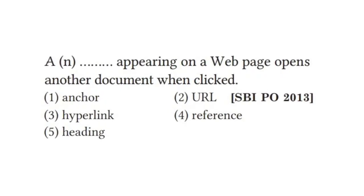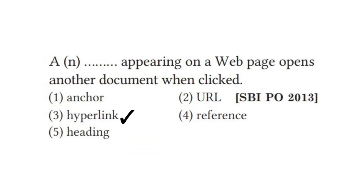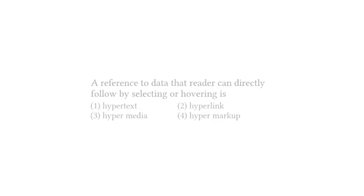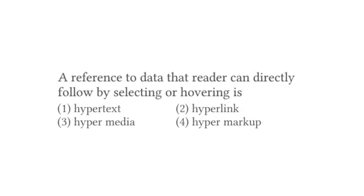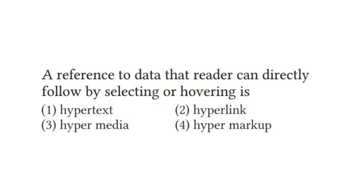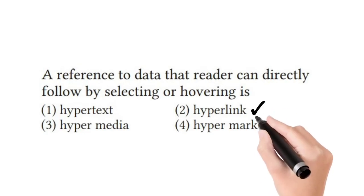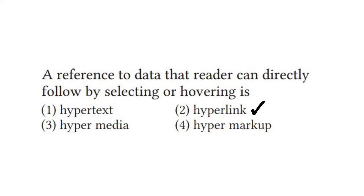When we click on a document, it opens via a hyperlink. This link, when opened, is blue in color and we automatically get another page. A hyperlink is a reference to data — that is the hyperlink.